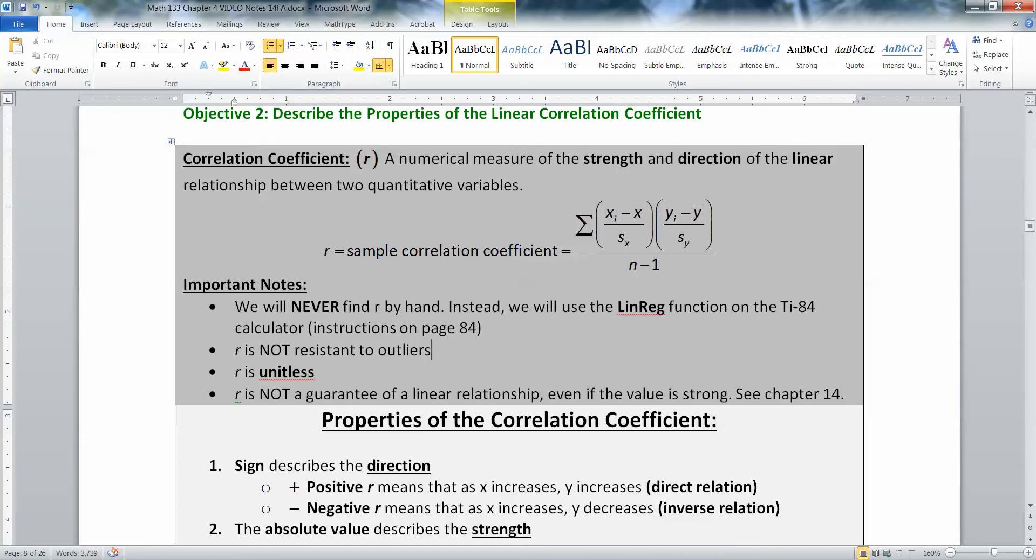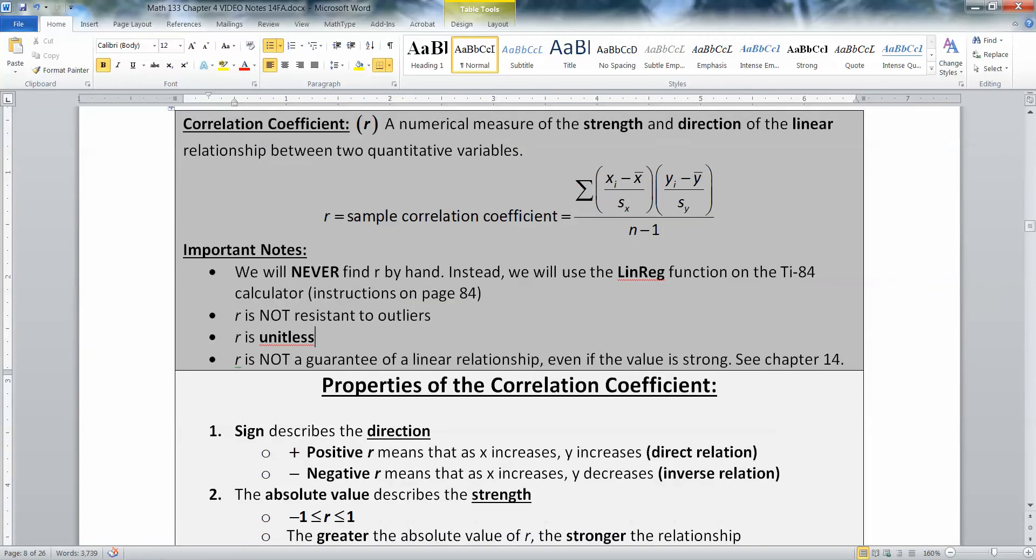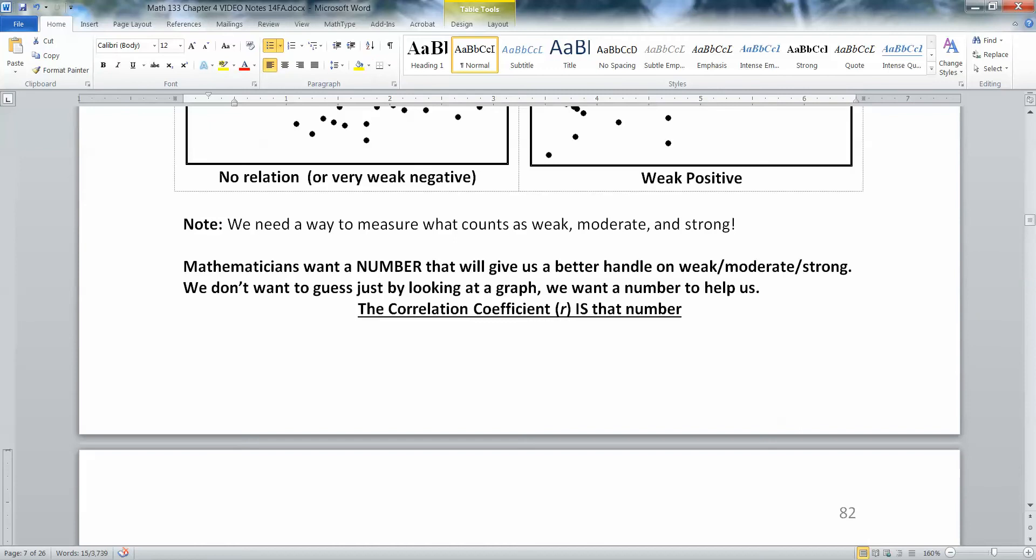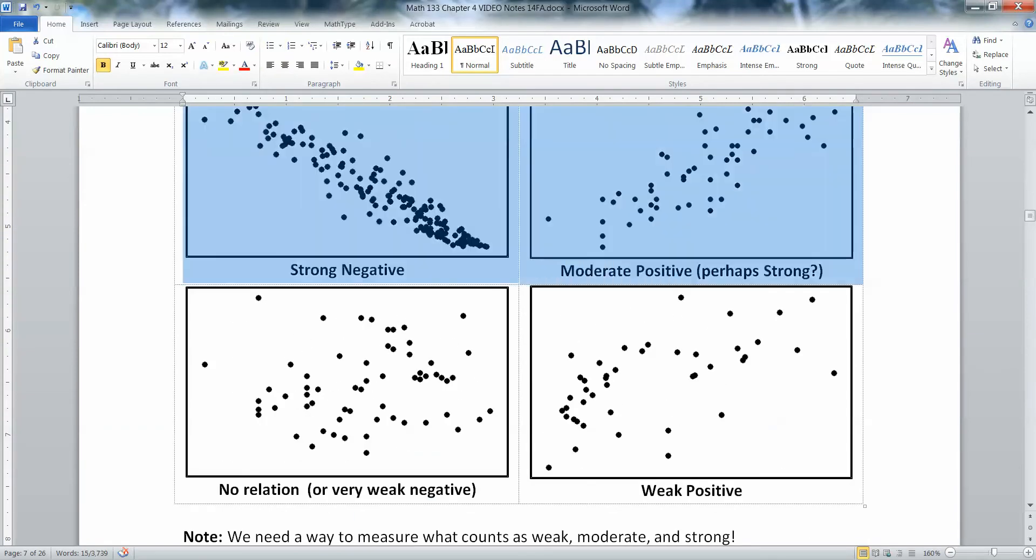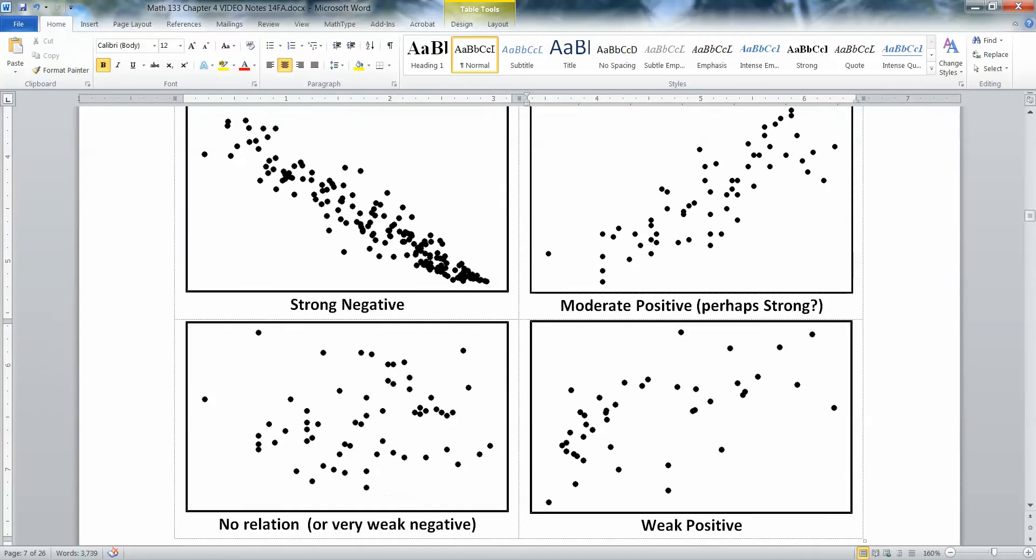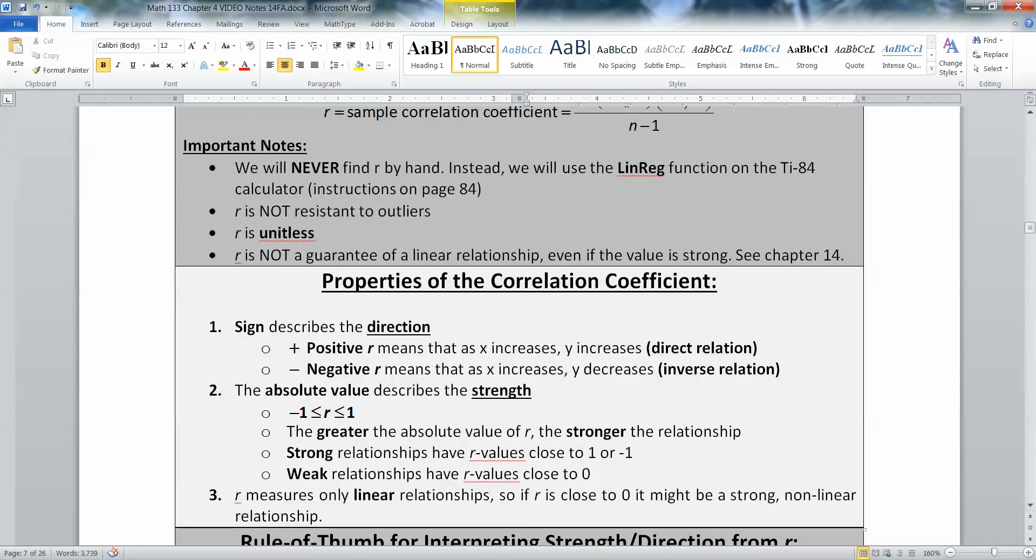Next thing to learn is that R is not resistant to outliers. If you have some data point that's way out there, it can pull R towards it and set R off a little bit. R has no units. If your data set was dollars, it doesn't matter. R is still R. It has no unit that goes along with it for various reasons, mostly algebraic. And R is not a guarantee of a linear relationship, even if it's got a very strong value. That's a little hard to take. The whole reason for creating R was that we want to know whether our relationship is moderate or strong, and it does that for us, but only to a certain extent. Having a high R value alone doesn't mean you have a linear relationship. It's good evidence towards one, but it's not guaranteed.